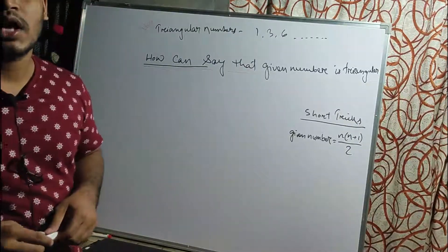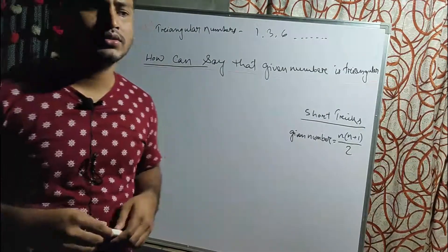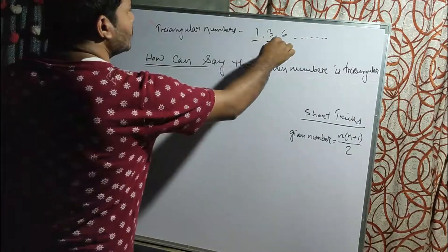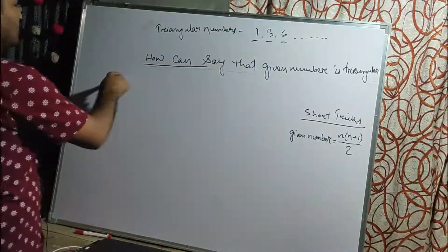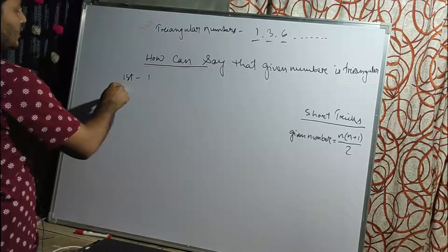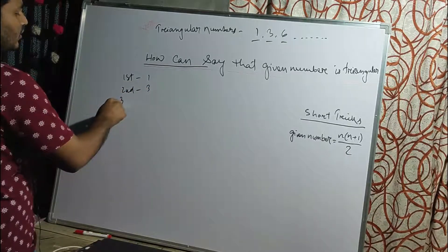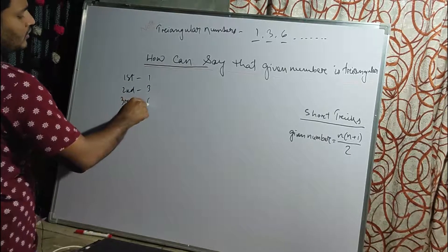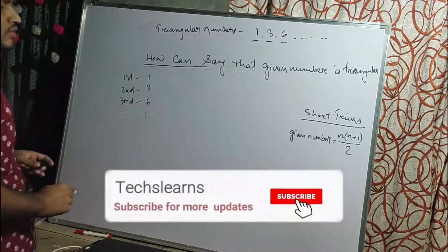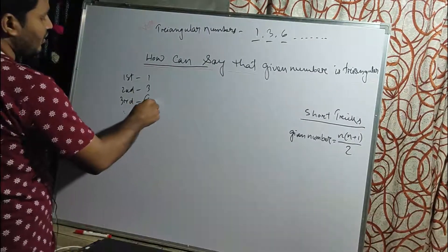Today we will discuss how we can say that a given number is triangular or not. We already know that triangular numbers are 1, 3, 6. The first triangular number is 1, the second is 3, and the third is 6.